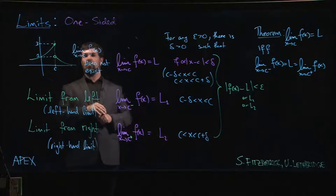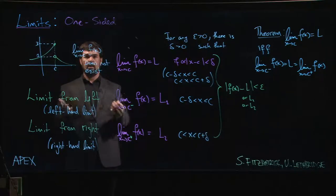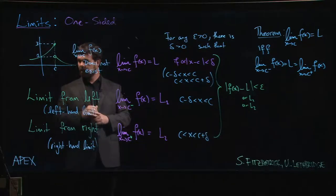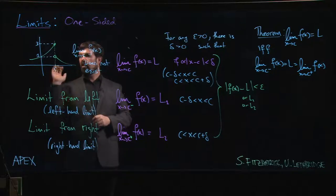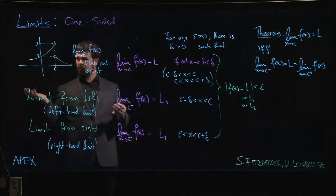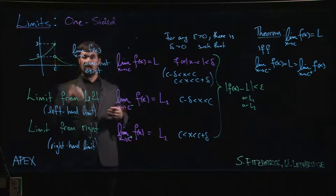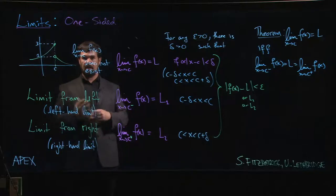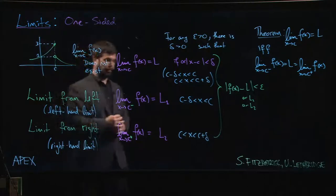So now when you're faced with a situation like this and someone asks why the limit does not exist, you have the language to explain it: the limit doesn't exist because the left-hand limit equals three and the right-hand limit equals one — the left and right-hand limits are not equal to each other.